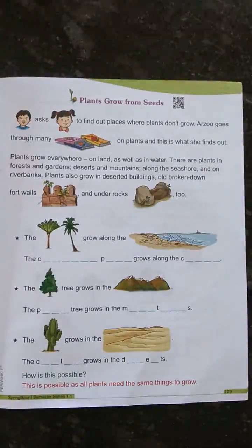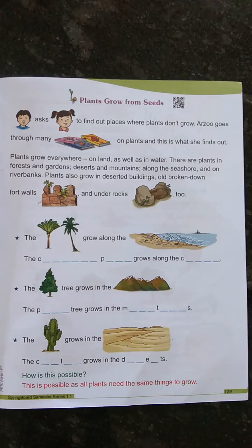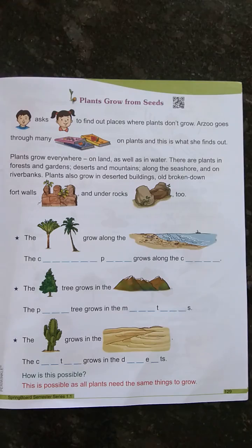Hello children. What are you doing? I think all are playing games. I hope all have completed the workbook of the first chapter and second chapter part 2. Today we are going to study about the second part, the first chapter. In the last class we learnt about types of plants.